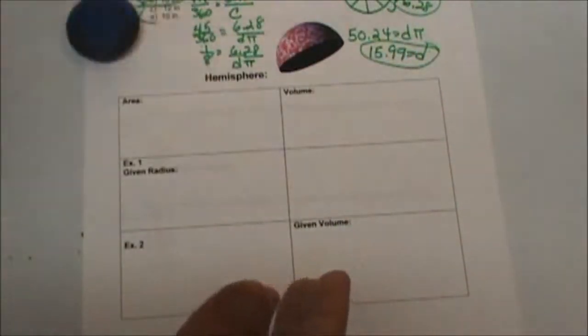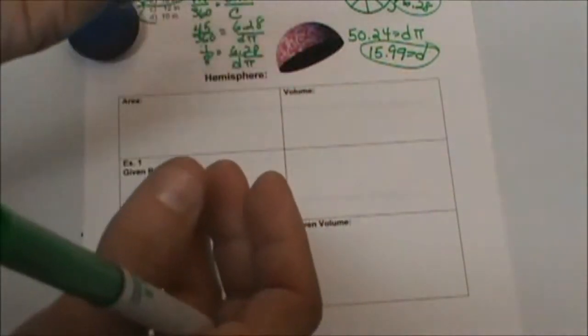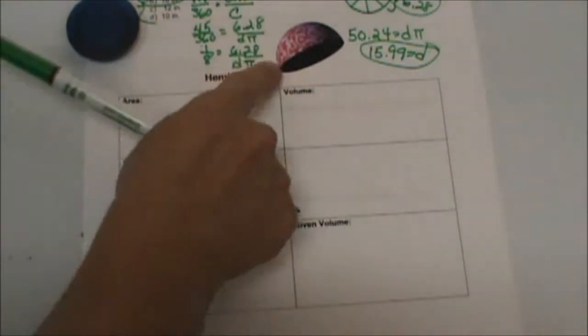What's a hemisphere? We take a sphere and slice it in half and you have the top and you have the bottom. It's like taking an orange and splitting it with your sibling and they get half and you get half. That's what we're talking about, just a hemisphere, half a sphere.